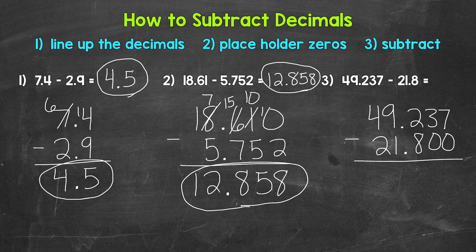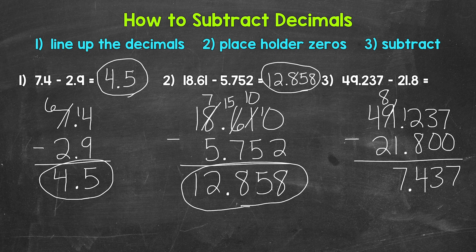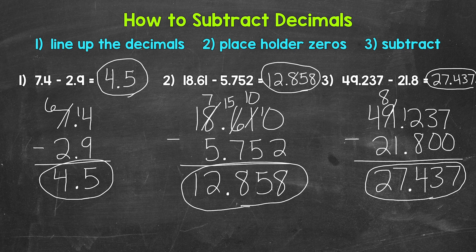Let's start with the thousandths place: seven minus zero gives us seven. Then three minus zero gives us three. Then we have two minus eight, so we need to borrow, and we end up with 12 minus eight, which gives us four. Then we bring our decimal straight down into the answer. Next, we have eight minus one, which gives us seven. And then four minus two is two. So we end up with 27 and 437 thousandths. So 49 and 237 thousandths minus 21 and eight tenths gives us 27 and 437 thousandths.